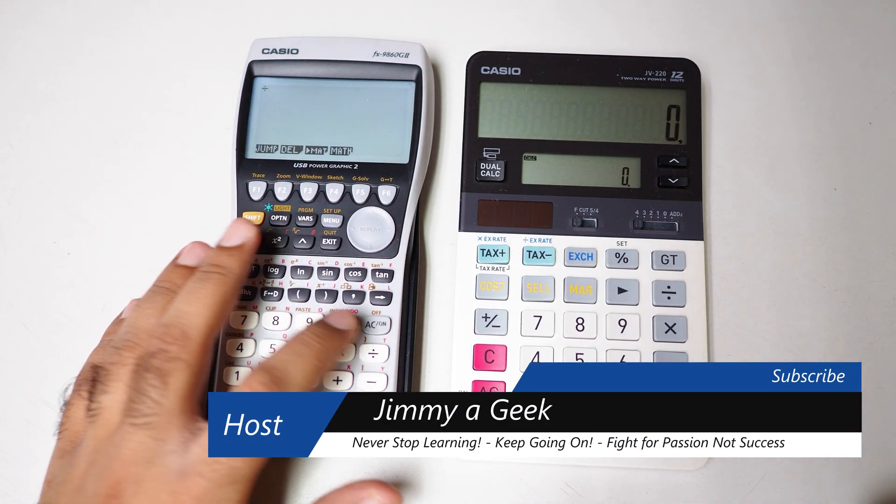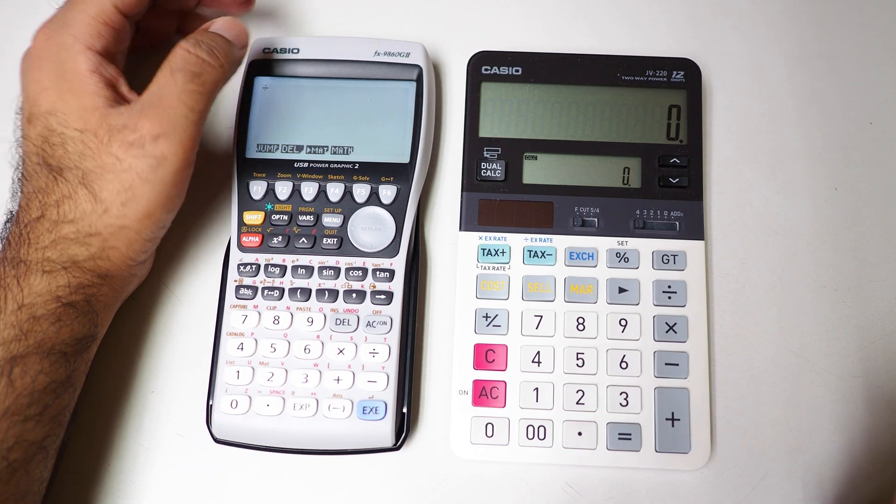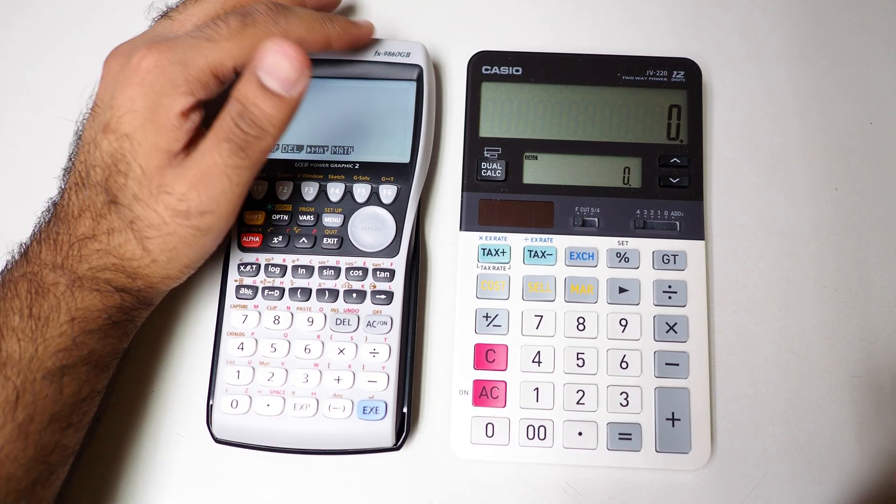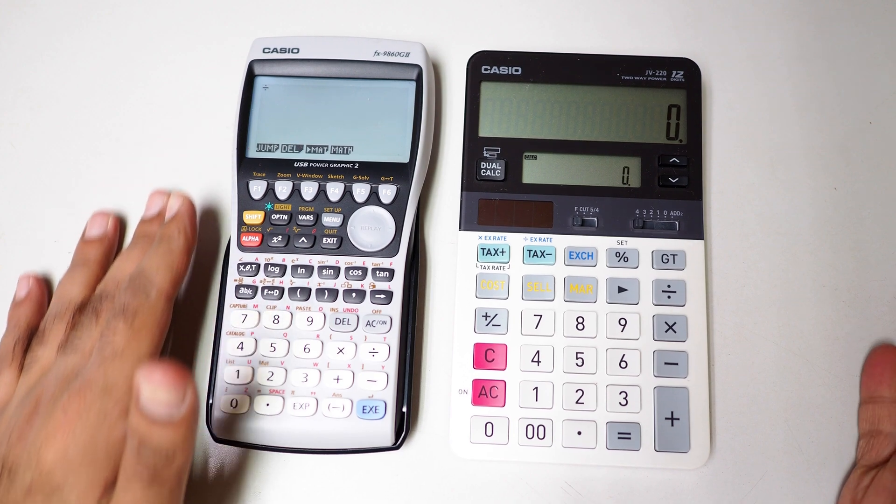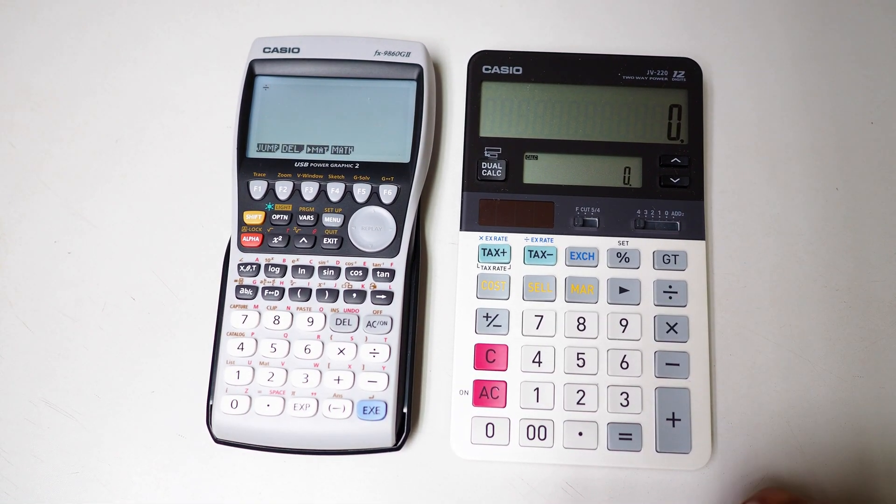What's up guys, it's me Jimmy. So this is the most famous Casio fx 9860g Mark II, and this is the dual calculation, a very famous calculator in calculation and special in bookkeeping, the JV220.